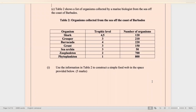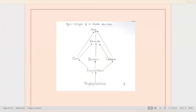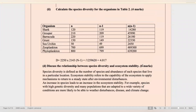Part C: table 2 shows a list of organisms collected by a marine biologist from the sea off the coast of Barbados. Use the information in table 2 to construct a simple food web in the space provided. Here is my food web — always remember your title. Note that phytoplankton is the producer.